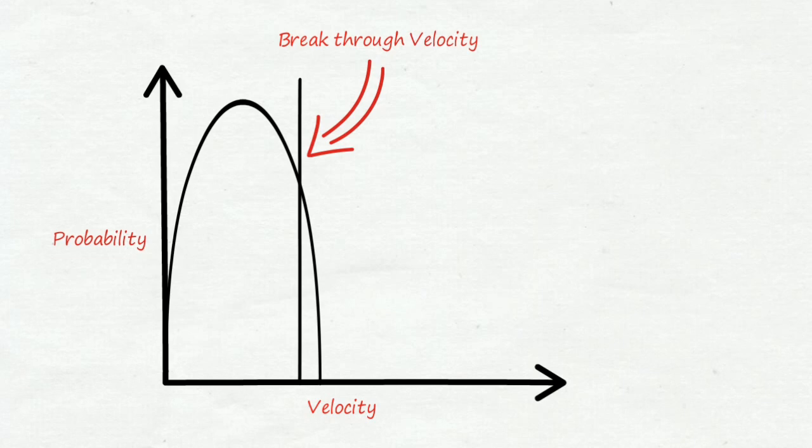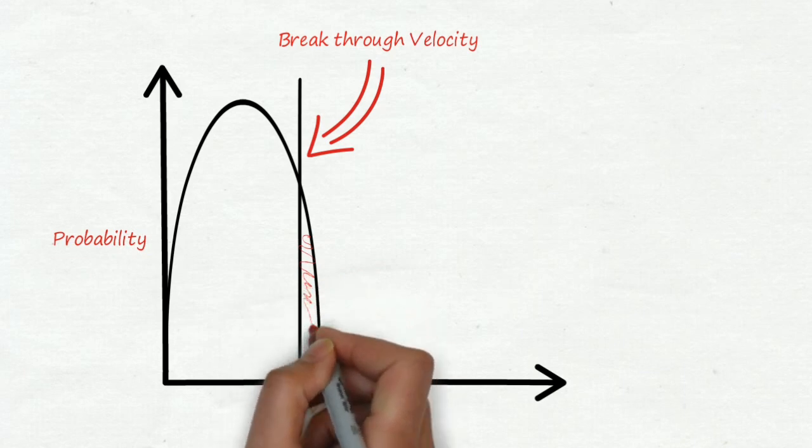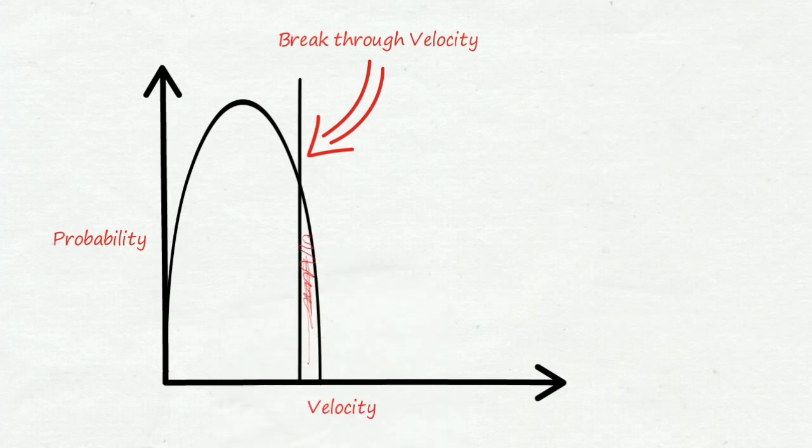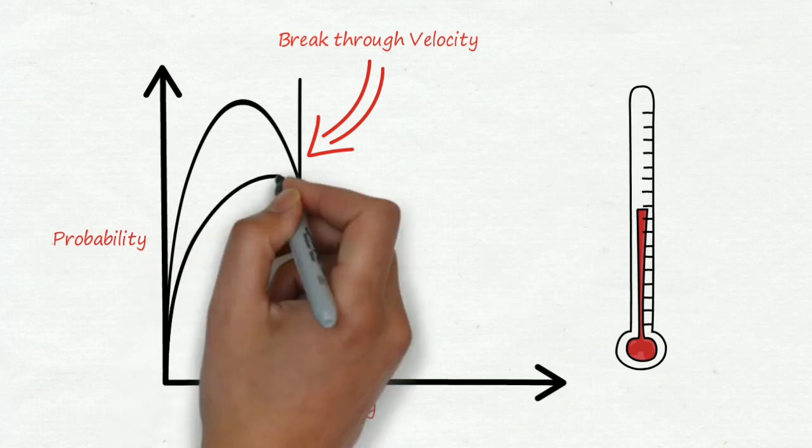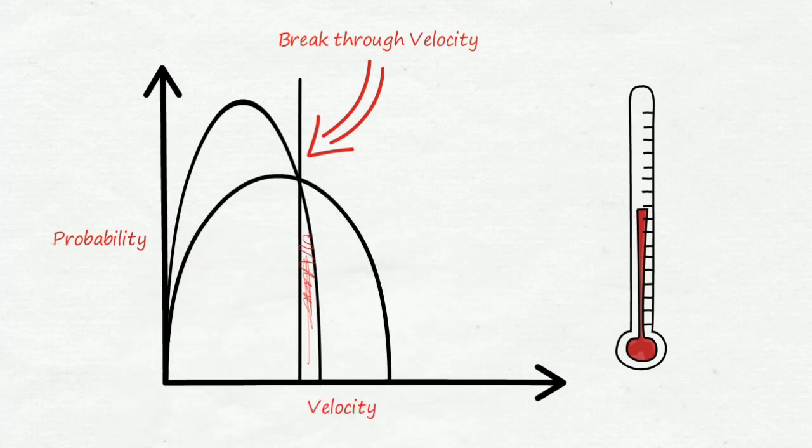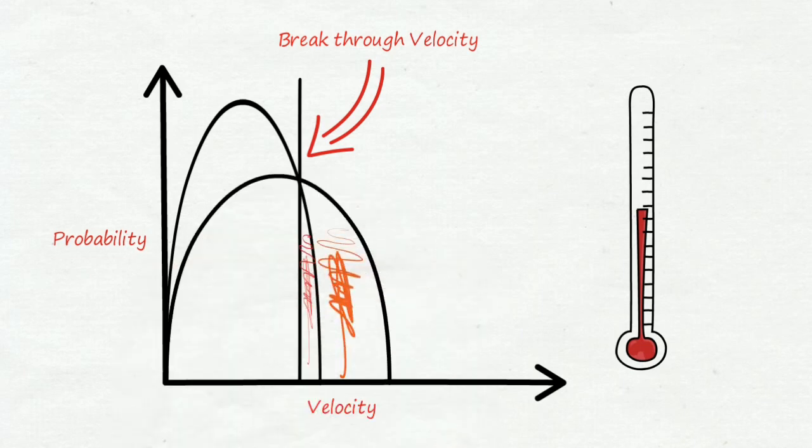These marginal molecules have enough energy to overcome the intermolecular force. Now, when the temperature increases, this curve becomes flatter and flatter, which means more molecules will be available to leave the liquid substance.